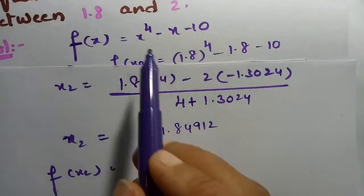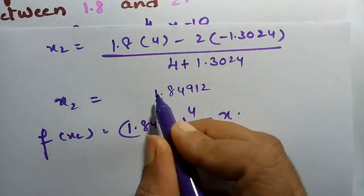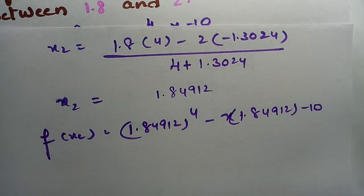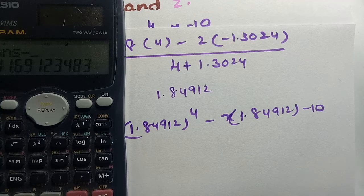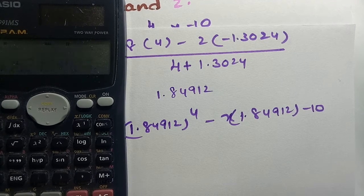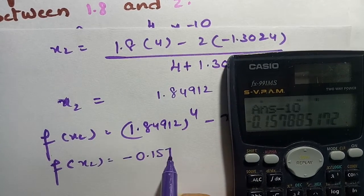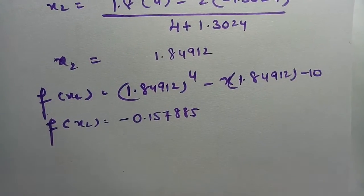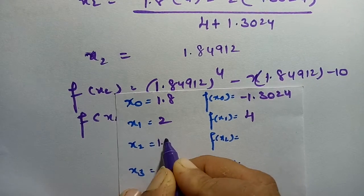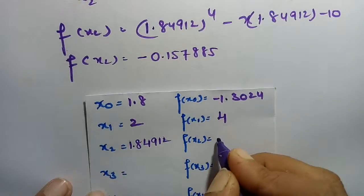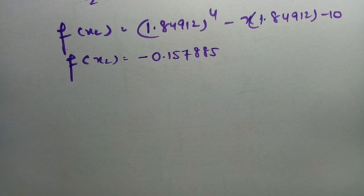Now we calculate f(x₂). The equation is x⁴ - x - 10, so substituting x = 1.84912: f(x₂) = 1.84912⁴ - 1.84912 - 10 = -0.157885. So f(x₂) = -0.157885, which is a negative value. We note x₂ = 1.84912 and must now proceed to find x₃.